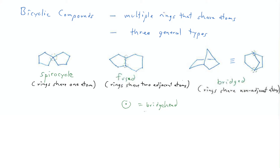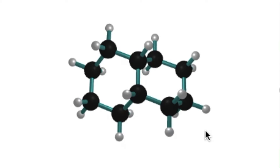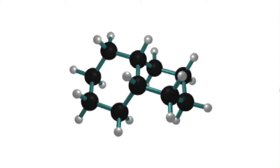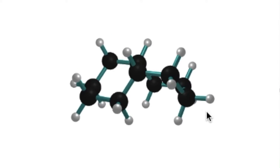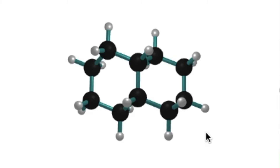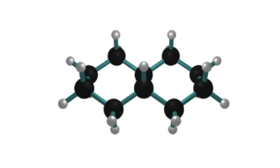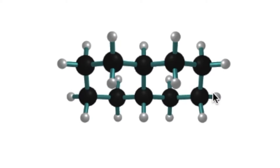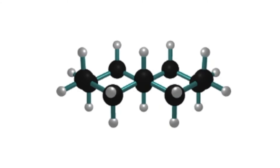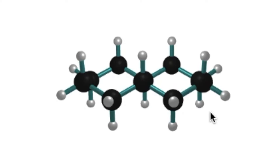In a fused bicycle, the two rings can be joined in either a cis or trans configuration. Here I have an example of a cis-fused bicycle — the two hydrogens on the bridgehead carbons are both pointing up in the same direction, which pushes the two rings down into a cupping shape. Contrast that to a trans-fused bicycle, where the two hydrogens are pointing in opposite directions — one up and one down — which flattens out the molecule. You can see it's really just two fused cyclohexanes in chair conformations.